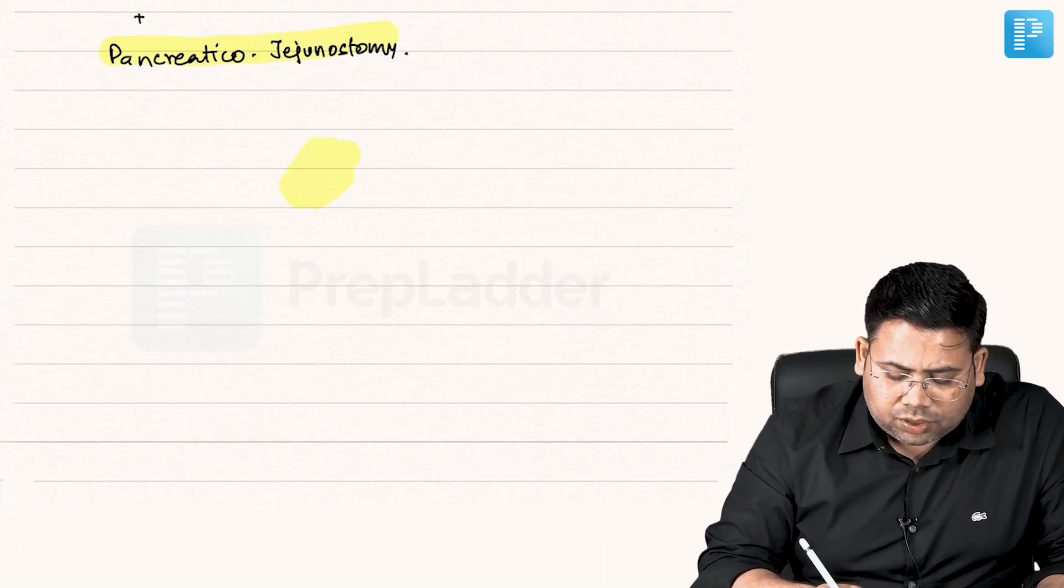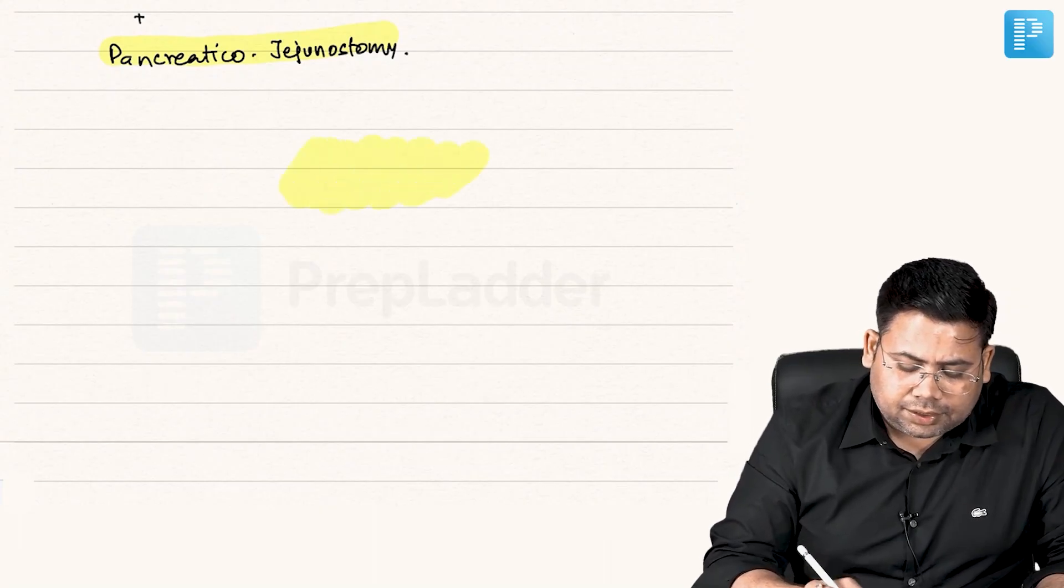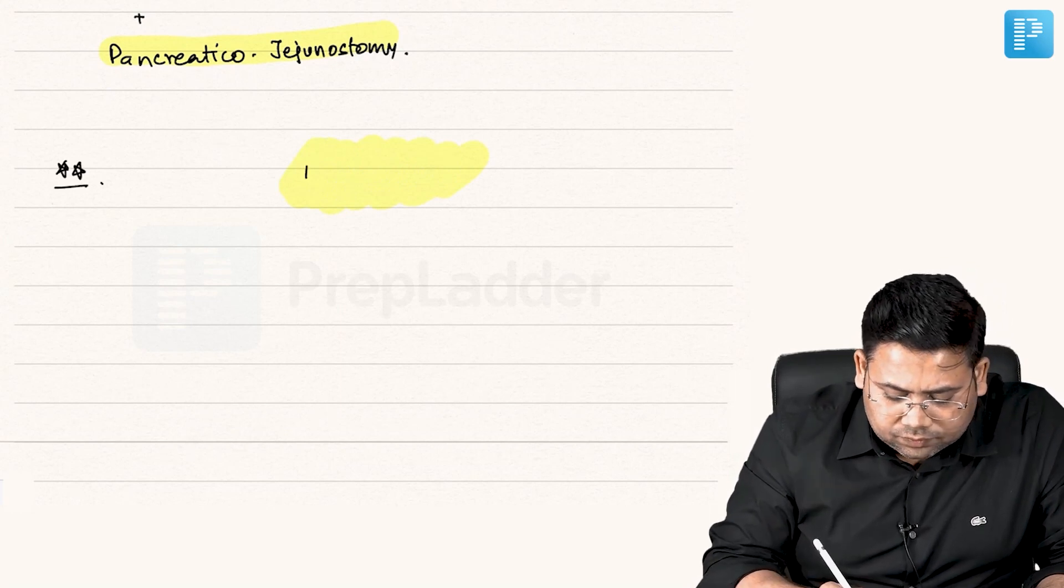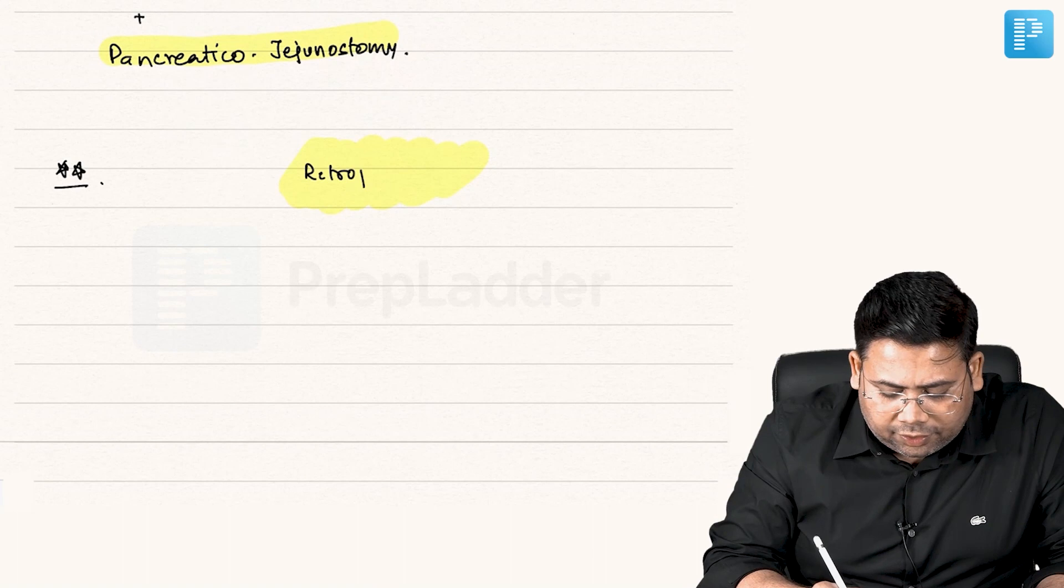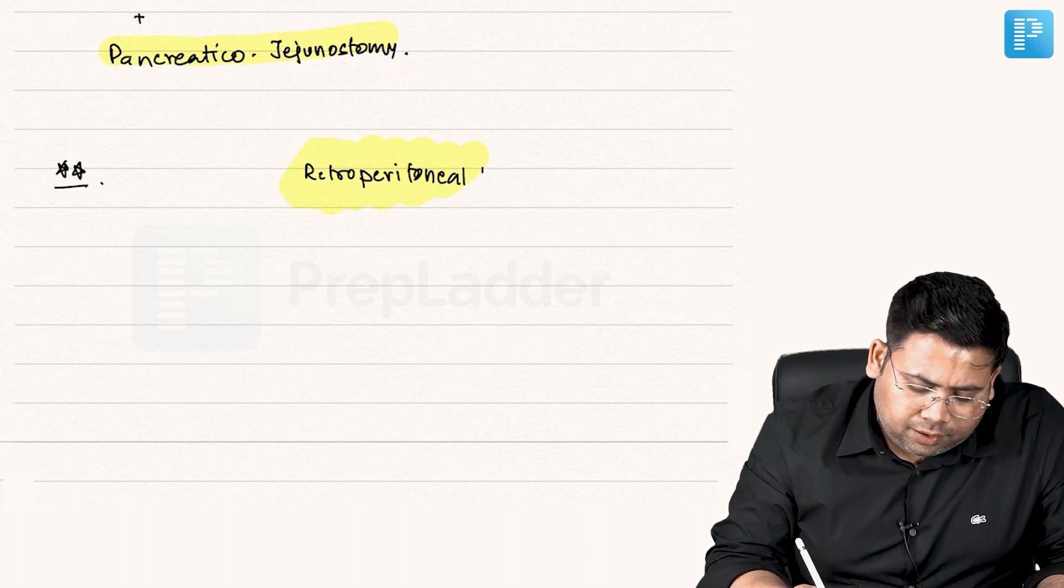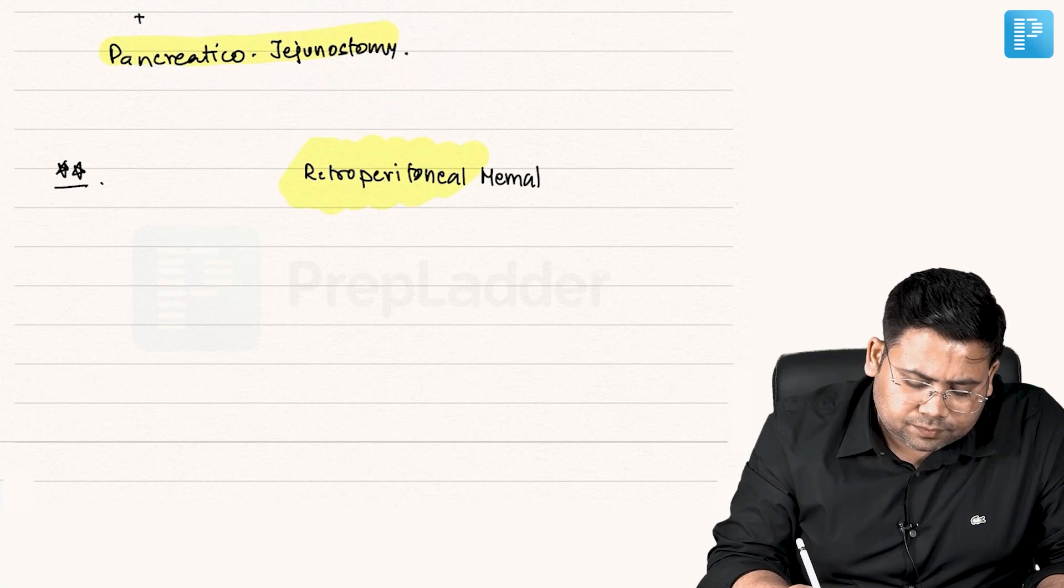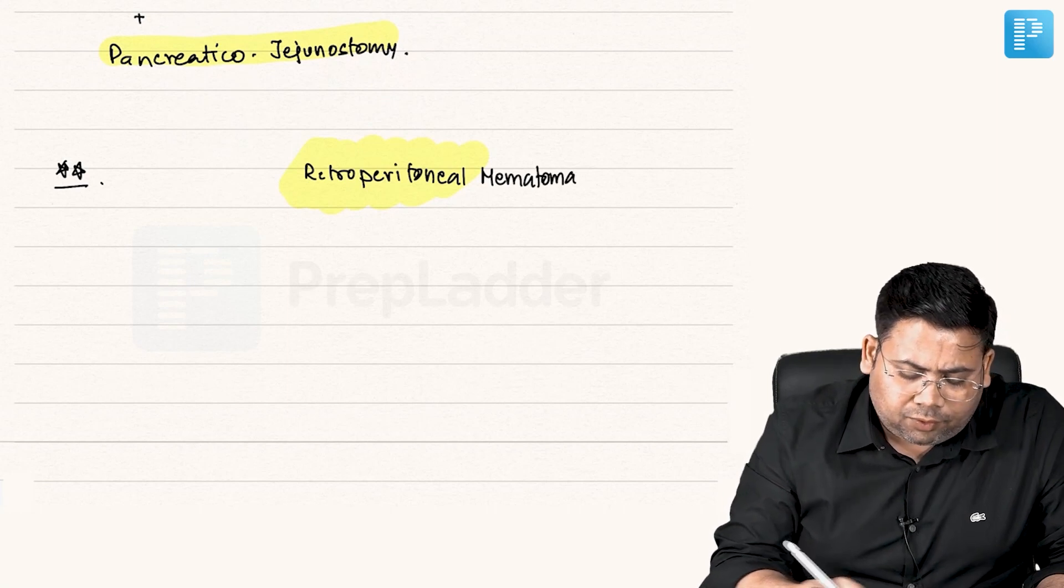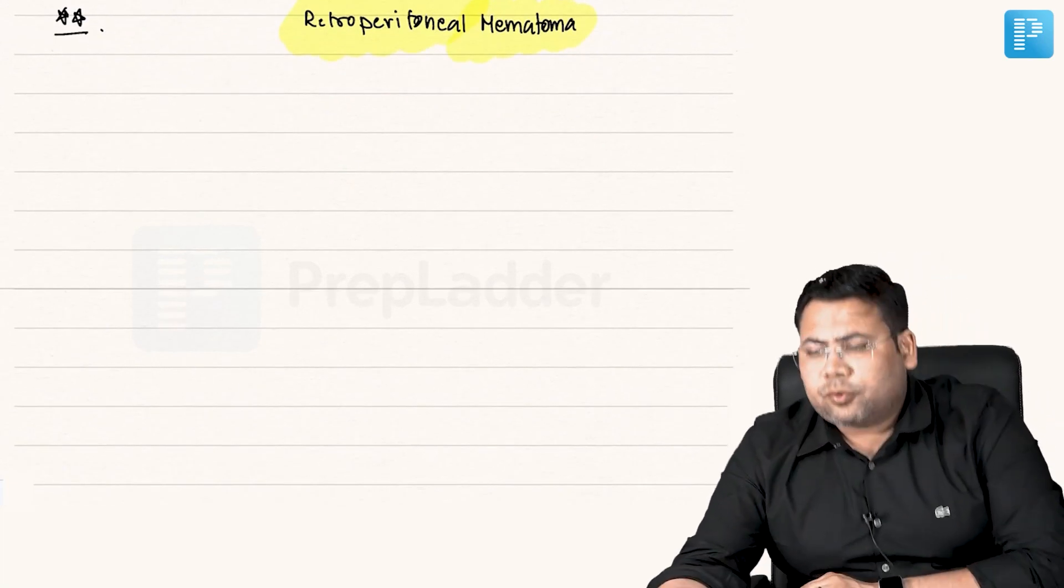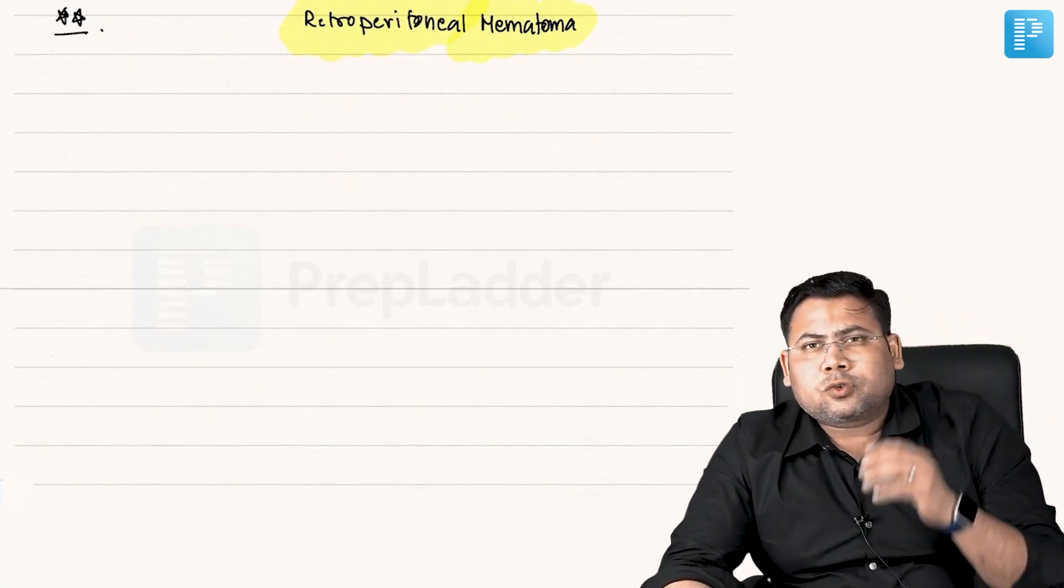Let us discuss one more special injury, the retroperitoneal hematoma. When we talk about the concept of retroperitoneal hematoma, the first thing you should know is what are the zones involved?